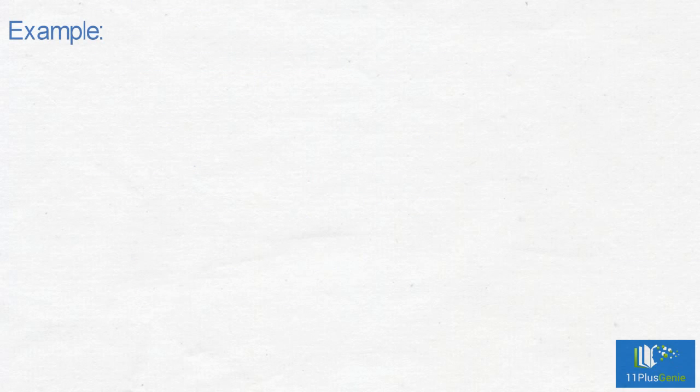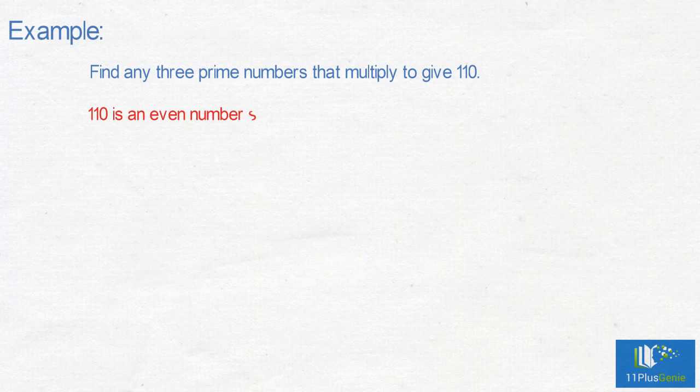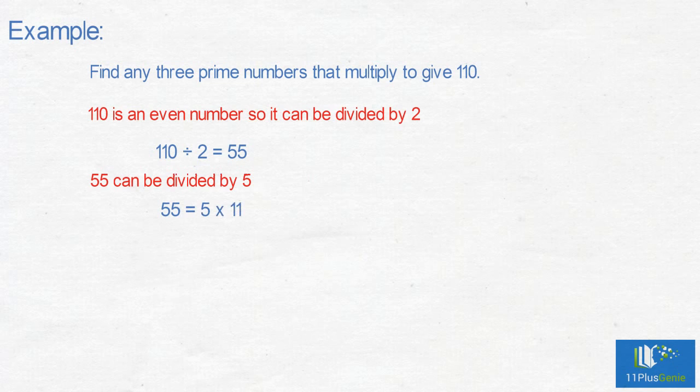Example on prime numbers. Find any three prime numbers that multiply to give 110. 110 is an even number so it can be divided by 2. 110 divided by 2 is 55. 55 can be divided by 5. 55 equals 5 times 11. So the three prime numbers we are looking for are 2 times 5 times 11, which equals 110.